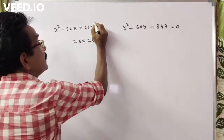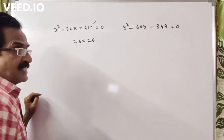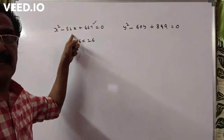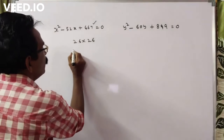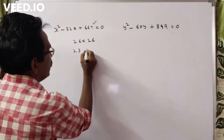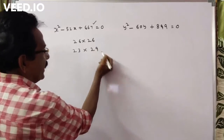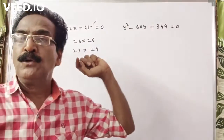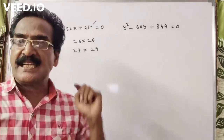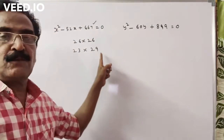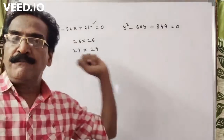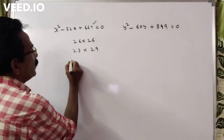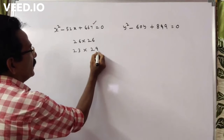But here it is not 667, so you have to reduce one factor and increase the other. The product must give 667 with a unit digit of 7, and the sum must be 52. So 23 into 29 equals 667, and 23 plus 29 equals 52.